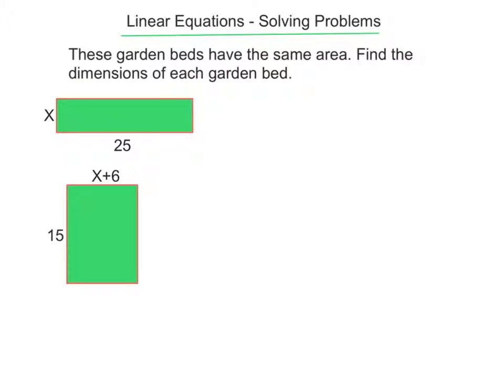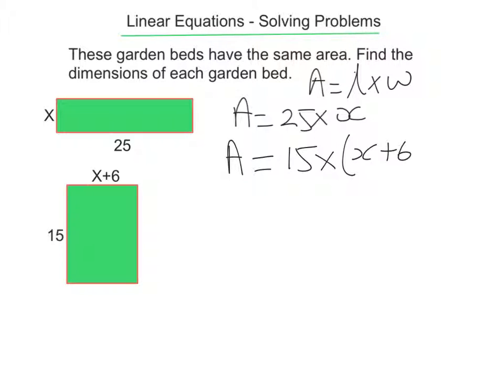In this last question, we've got two garden beds, and it says these garden beds have the same area. Find the dimensions of each garden bed. So we know that area equals length by width. For the first rectangle, the length is 25 and the width is x, so the area is going to be 25 multiplied by x. For the second rectangle, the length is 15 and the width is x plus 6. So if I'm going to write the area for those, I'm going to write area equals 15 multiplied by x plus 6. And because it's x plus 6, I'll put it in a bracket so that there's no doubt that that whole thing, the x plus 6, is actually the whole of the width.